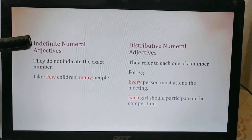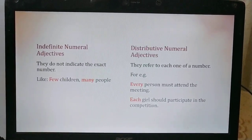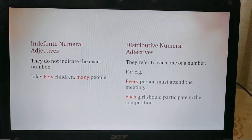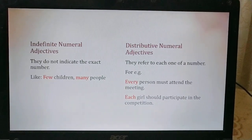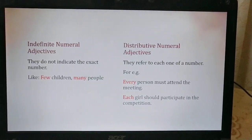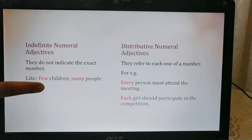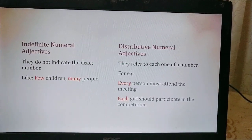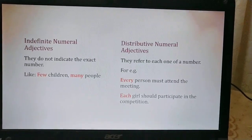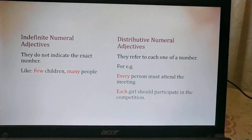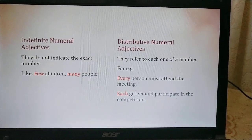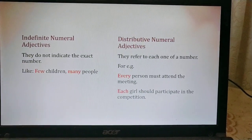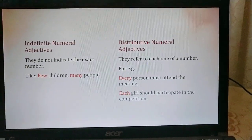When talking about indefinite numeral adjective, they do not indicate the exact number — it is a little vague. You use words like 'few' or 'many.' You do not know the exact number — 'few children' could be two, three, or four children. 'Many people' can be uncountable; you cannot exactly keep counting. That is why it is called indefinite.